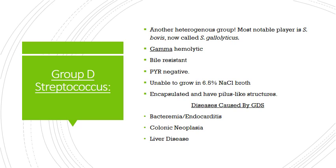Group D streptococcus is another heterogeneous group. Most notably it includes S. bovis, but S. bovis has been broken into two biotypes containing three additional organisms. The other way S. bovis is referred to today is S. gallolyticus. So if you see S. gallolyticus, S. bovis, or Group D strep, we're talking about the same things — all of those are equivalent to each other.